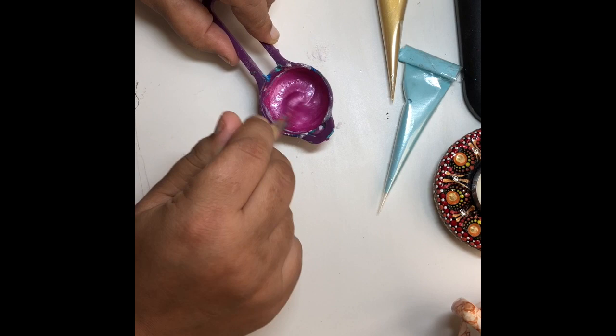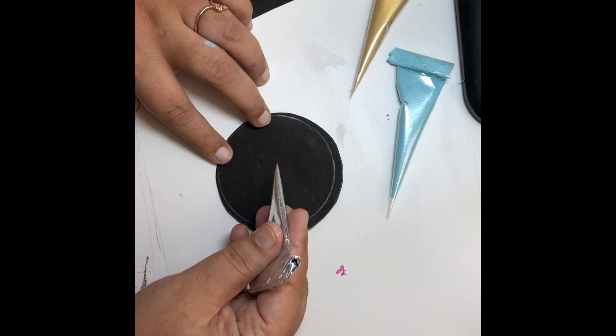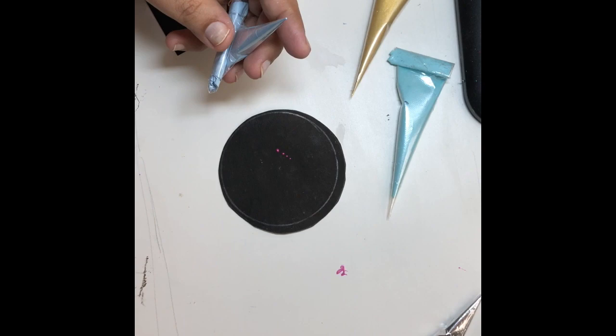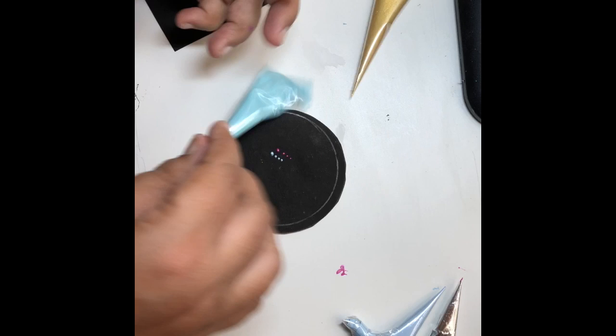Now let's test these cones. This cone is giving nice dots, it's ready to be used. This other cone you have to cut it a little bit from the top so that paint should come out and you can use it. This is also working fine. And this one also you have to cut it a little bit and it will also be ready to use.